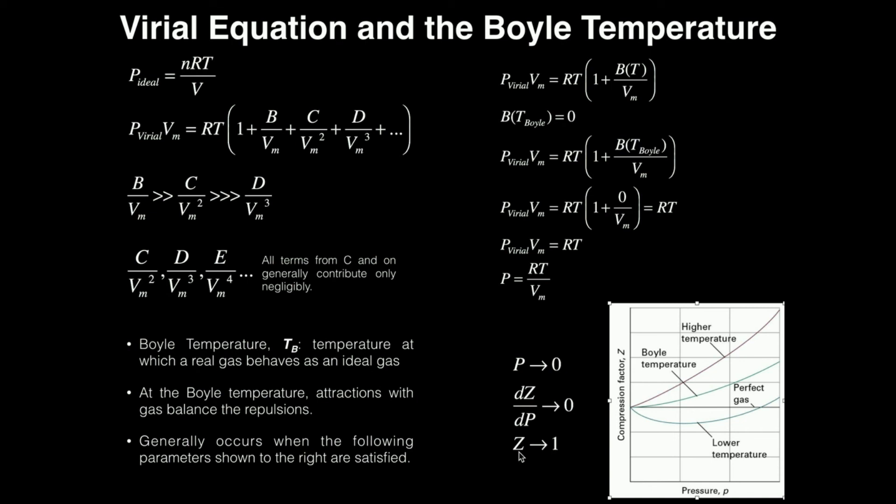If you remember what the compression factor is, it is a measure of the ideality of a gas — or the reality of a gas. So if you have a compression factor Z that is not one, meaning it's bigger than one or less than one, that implies that you have a real gas.